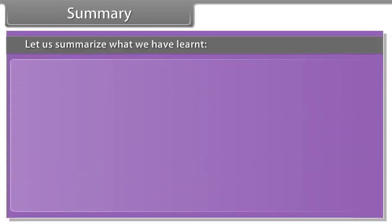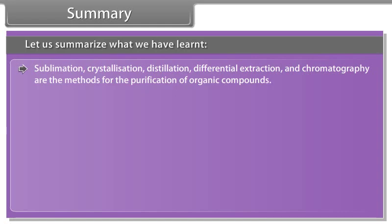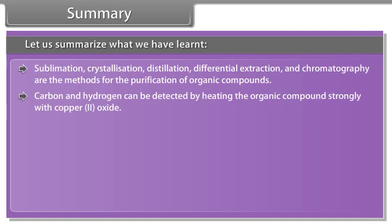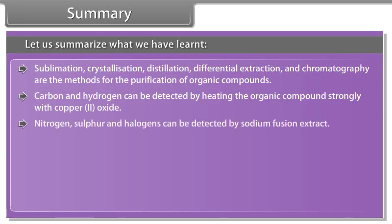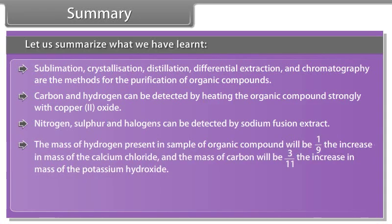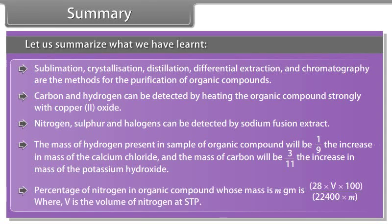Summary: sublimation, crystallization, distillation, differential extraction, and chromatography are the methods for purification of organic compounds. Carbon and hydrogen can be detected by heating the organic compound strongly with copper oxide. Nitrogen, sulphur, and halogens can be detected by sodium fusion extract. Mass of hydrogen = (1/9) × increase in mass of calcium chloride; mass of carbon = (3/11) × increase in mass of potassium hydroxide. Percentage of nitrogen = (28 × V × 100) ÷ (22,400 × M), where V is the volume of nitrogen at STP.